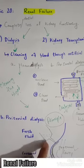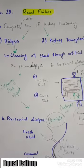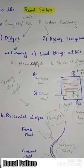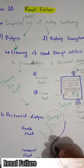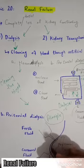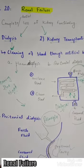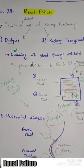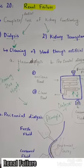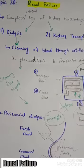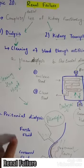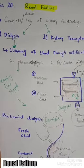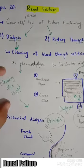Fresh fluid is injected into the peritoneal cavity. The peritoneal cavity has an extensive supply of blood capillaries. Since the nitrogenous waste concentration is higher in the capillaries, the nitrogenous waste moves into the fresh fluid by diffusion. This fluid is then collected into a bag attached to the patient's belly, and fresh fluid is re-entered. This is a comparatively less efficient but time-taking process.